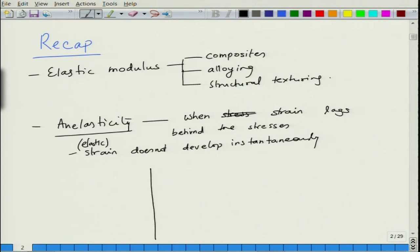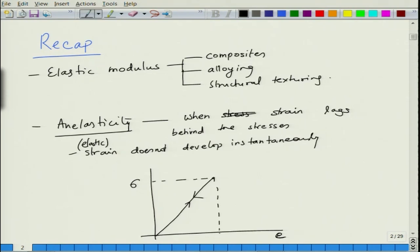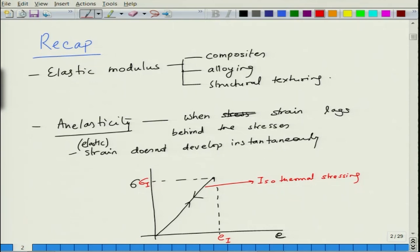In an ideal situation, you have sigma versus epsilon. The ideal case is when you go on this route you come back on the same route — this is basically called isothermal strain or stress, sigma_i. Under isothermal stressing, the stressing is done at such a rate that there is no change in temperature, so the strain follows the stress instantaneously and when you drop the stress back to zero, the strain also drops back to zero.